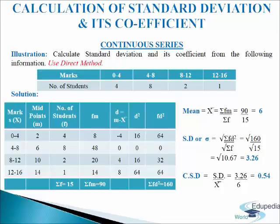Now come to CSD, that is coefficient of standard deviation, which equals to SD divided by mean. We got SD as 3.26 and mean is 6. So 3.26 divided by 6 gives us 0.54 as the coefficient of standard deviation. This is how we calculate standard deviation and its coefficient in continuous series using direct method.